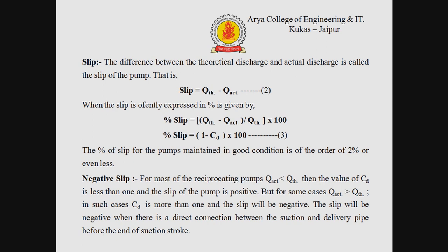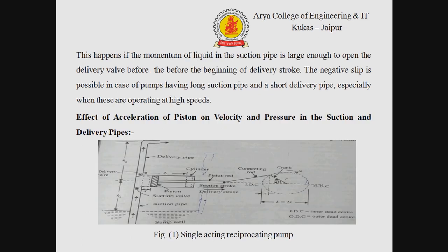Negative slip: for most reciprocating pumps, Q theoretical is always greater than Q actual, meaning the coefficient of discharge is less than 1 and the slip is positive. But in some cases where actual discharge is greater than theoretical discharge, CD is more than 1 and the slip will be negative. The slip will be negative when there is a direct connection between the suction and delivery pipe before the end of the suction stroke. This happens if the momentum of the liquid in the suction pipe is large enough to open the delivery valve before the beginning of the delivery stroke.